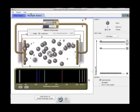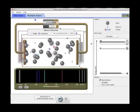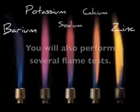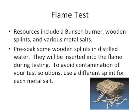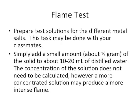You should now have enough information to get started on your investigation with the simulation. To begin the flame test, pre-soak some wooden splints in distilled water — they will be inserted into the flame during testing. To avoid contamination of your test solutions, use a different splint for each metal salt solution. Prepare test solutions for the different metal salts; this task may be done with your classmates, and everyone does not need their own salt solution.